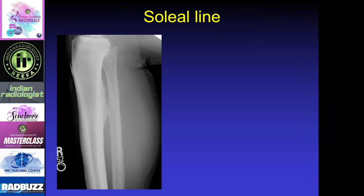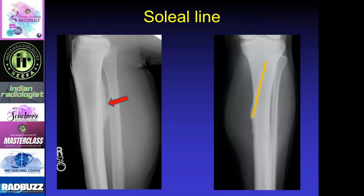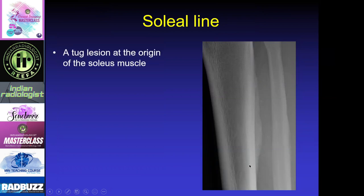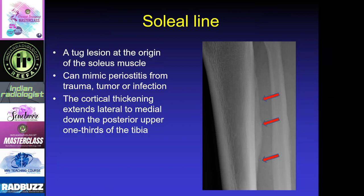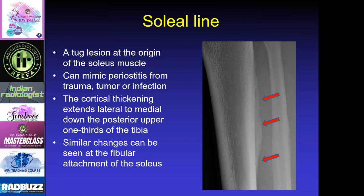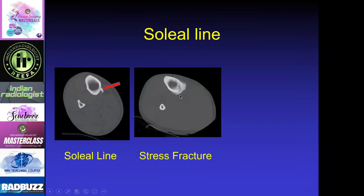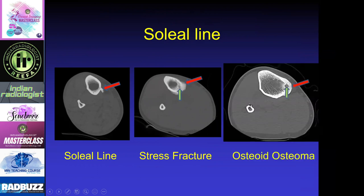The soleal line is something we see all the time and can be mistaken for a stress fracture, osteoid osteoma, or a tug lesion. This is a tug lesion at the attachment of the soleus muscle — the soleus attaches onto the back part of the tibia and fibula, and this line always goes in the upper one-third of the tibia, going lateral to medial as you go down toward the ankle. On CT we see a little calcification, and similar changes can occur at the fibular attachment. You don't want to over-call this as some type of aggressive lesion attacking the tibia.